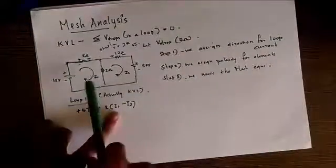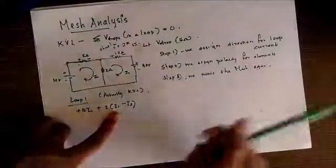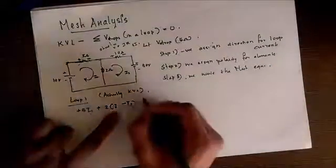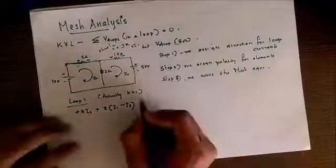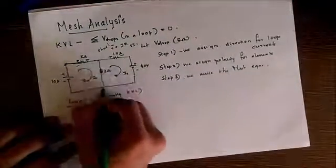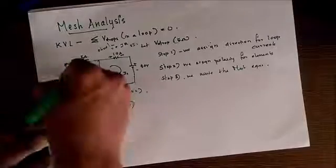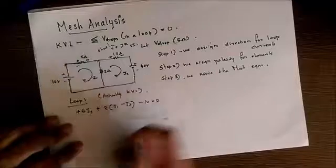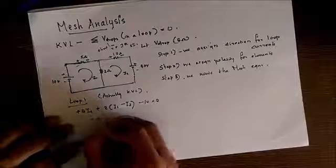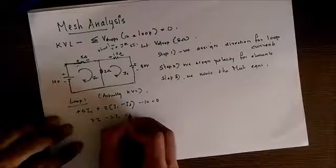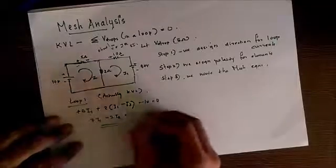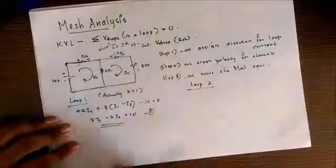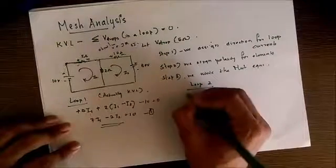This is all just an assumption. We get the answer as negative or positive according to our assumption, right or wrong. That's not an issue. Now we move on to the 10 ohm, 10 volt battery, and we get minus 10 equal to 0. Solving, we get 7*I1 minus 2*I2 equal to 10. This is our first loop equation or mesh equation.